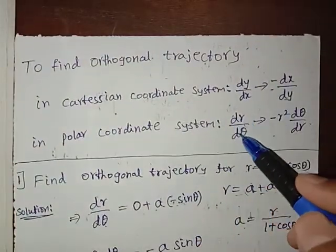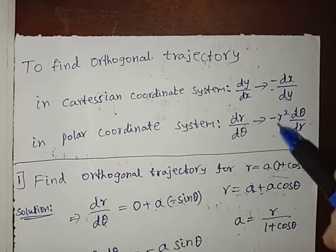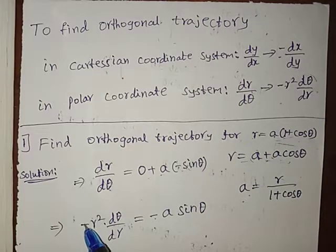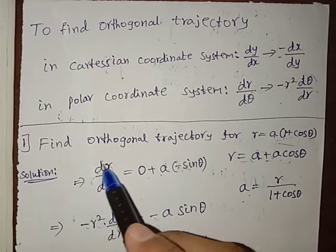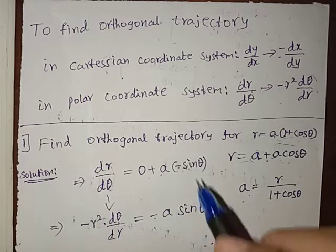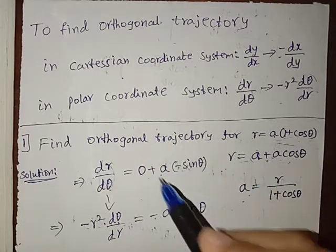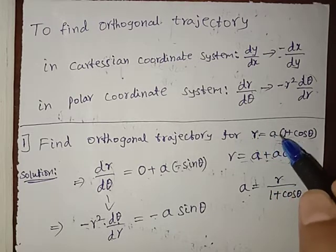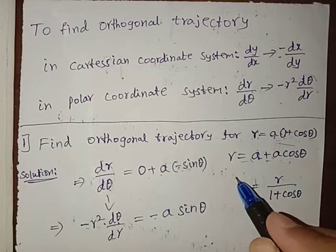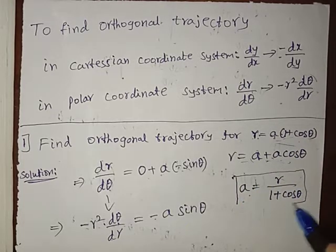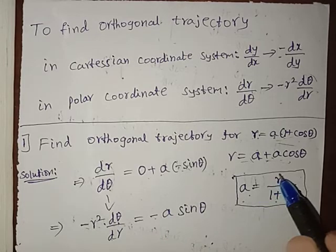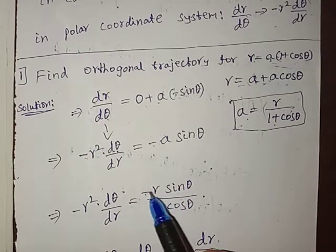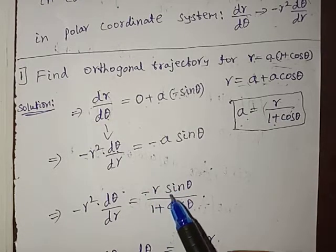To get the orthogonal trajectory, we replace dr/dθ with minus r² dθ/dr. So we have minus r² dθ/dr = minus a sinθ. From the original equation, we can write a = r / (1 + cosθ). Substituting the value of a, we get minus r² dθ/dr = minus r(1 + cosθ) sinθ.